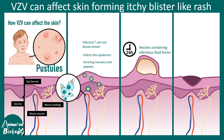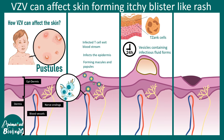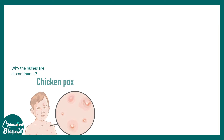Within 24 hours, vesicles form. Tzanck cells are found in many cases — these are altered keratinocytes with multiple nuclei. Eventually these macules or papules resolve, forming scabs, but the site can still shed some virus.